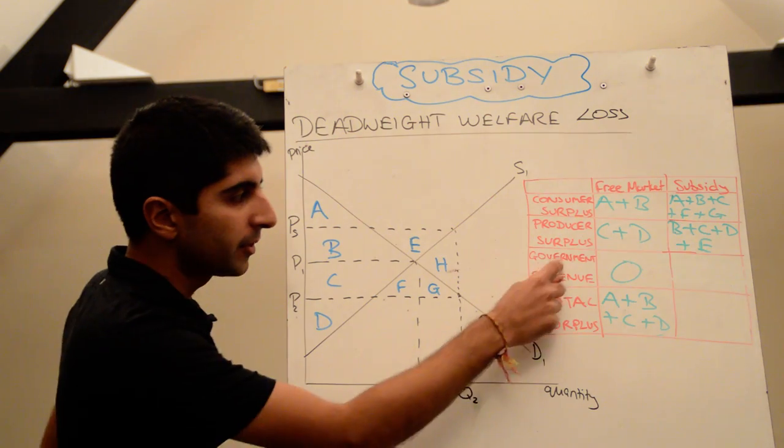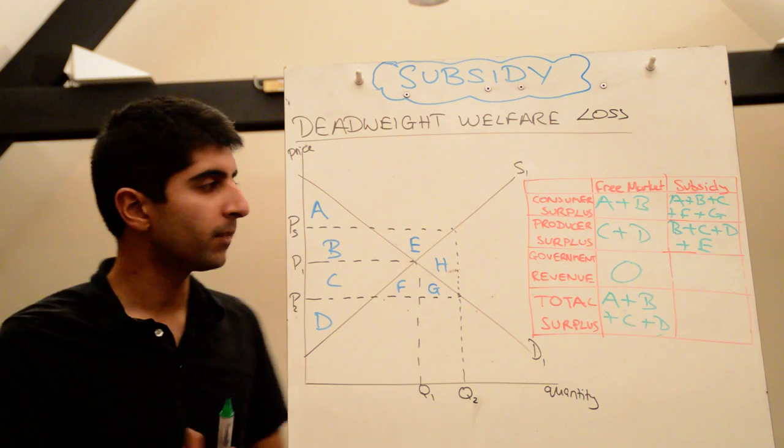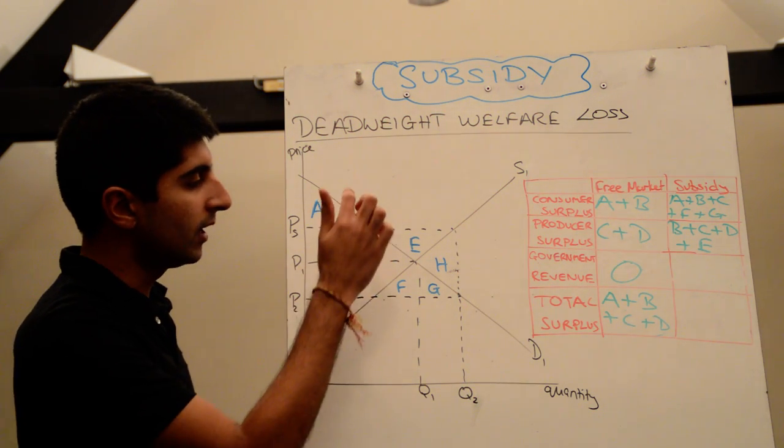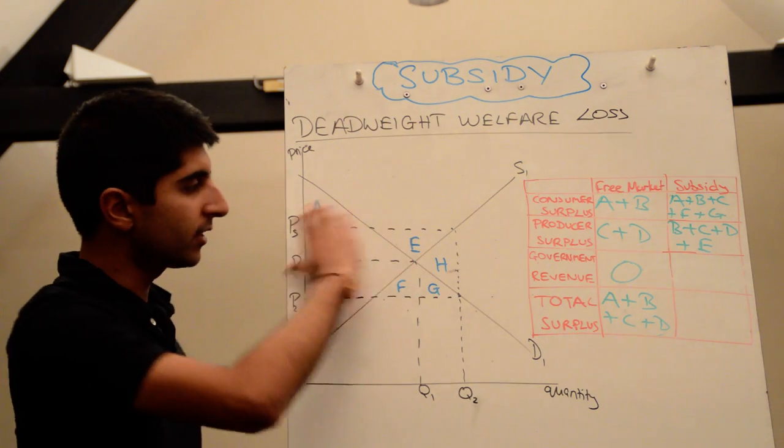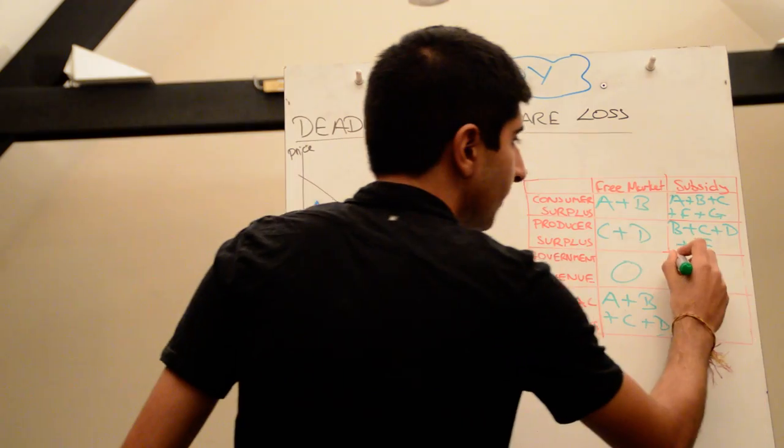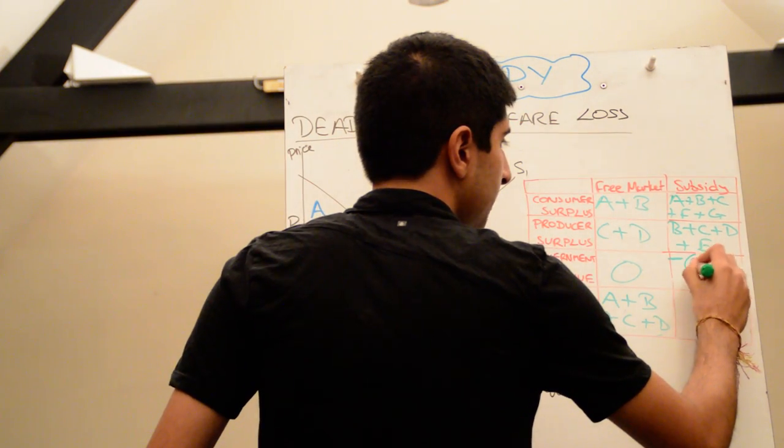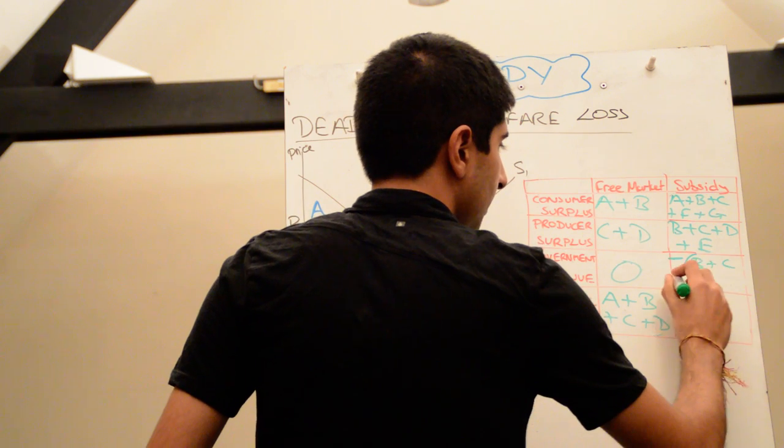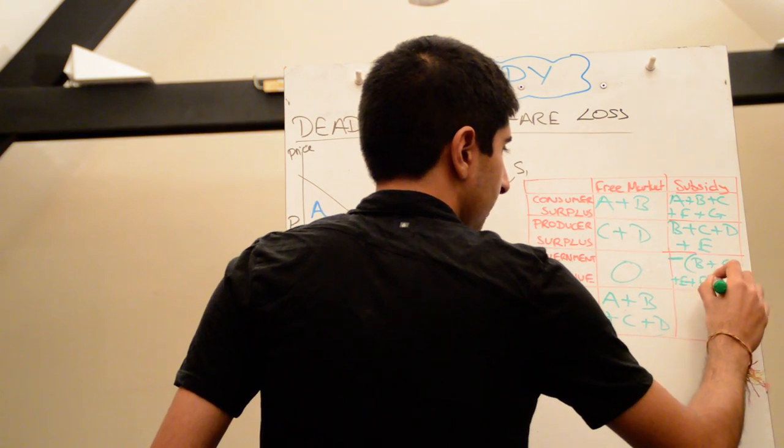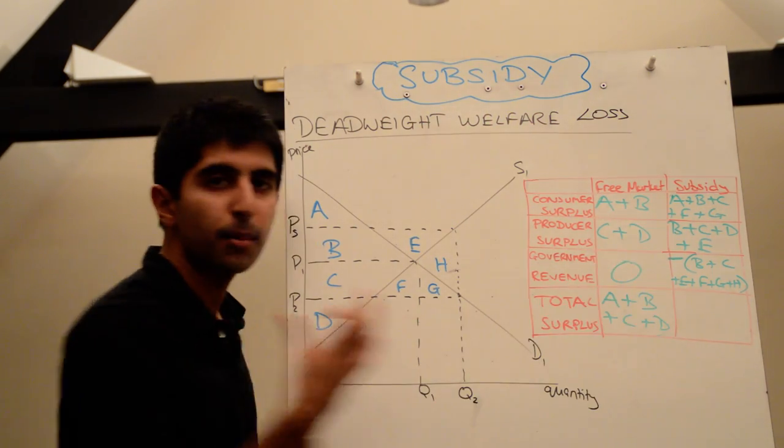Let's have a look now at how much the government is suffering. So we know there is a cost to the government as a result of implementing the subsidy. So the cost of the government is just the rectangle B, C, F, G, H and E. That entire rectangle there is the cost of the government, which you should be aware of from my last video. So in terms of revenue, it's minus, right? It's going to be a cost. So it's minus brackets B plus C plus E plus F plus G plus H. So it's basically minus that entire bracket.